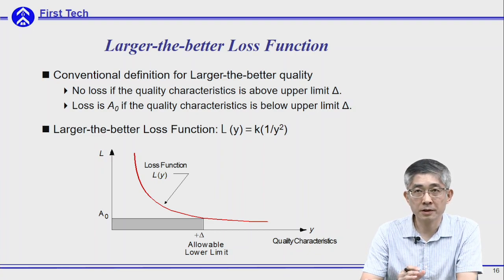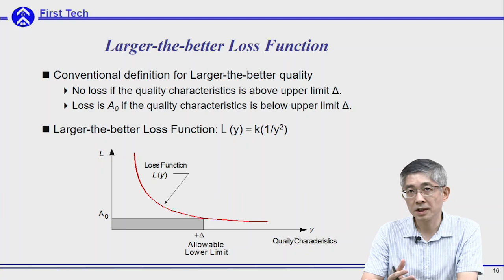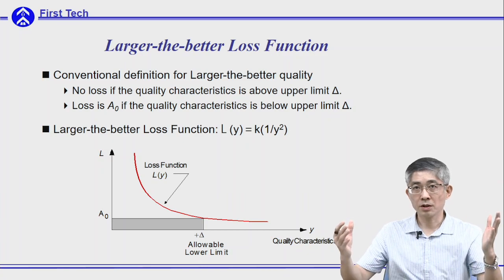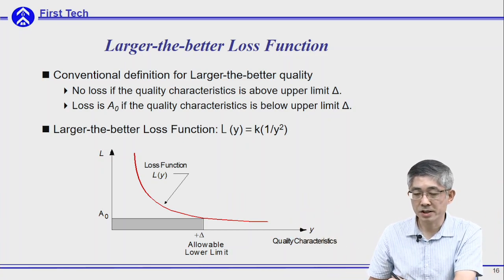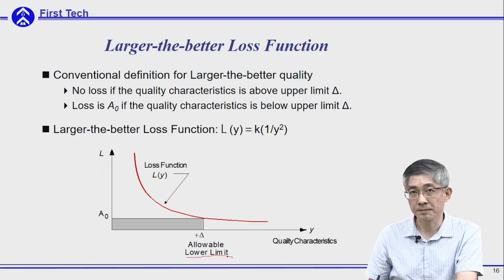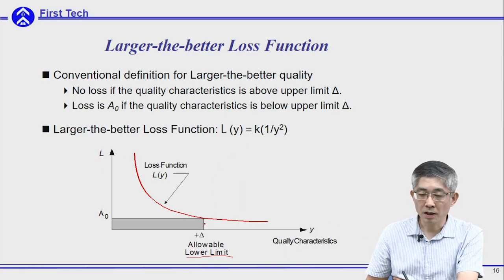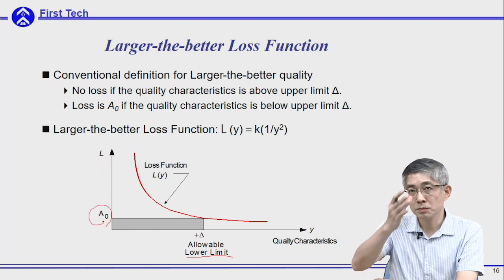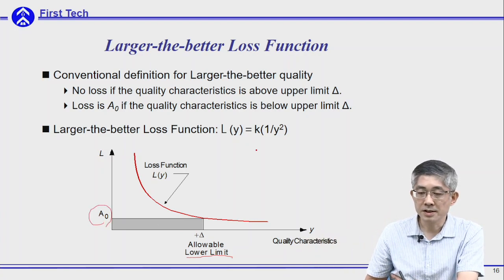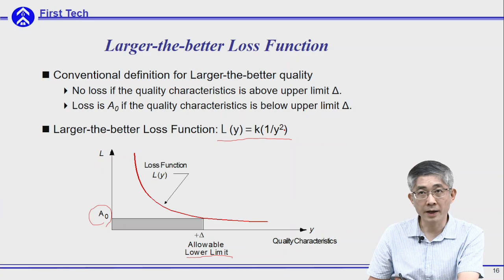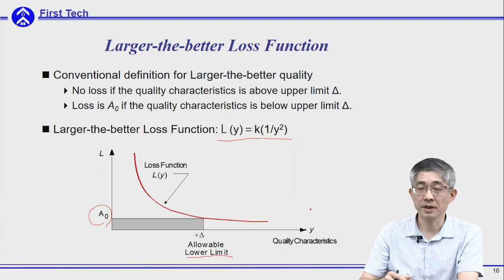The third type of loss function is called larger-the-better. If you prefer something such as energy efficiency or structural strength, you hope the value will be as large as possible. In the past, you would set up an allowable lower limit — anything above that is acceptable — but if your performance is below the tolerance limit there will be some loss. The quadratic function Taguchi proposed makes the relationship continuous: if you have a larger output Y the loss will be smaller.